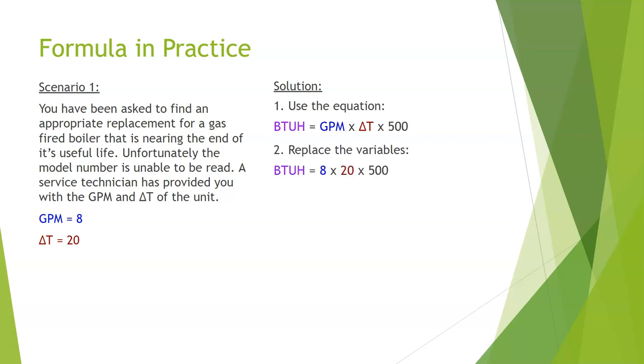The second thing I do is replace my variables. BTU equals 8 GPM times delta T of 20 times my magic number of 500. Now I work the formula. BTU equals 8 times 20, which gives me 160, times 500. That gives me a BTU of 80,000 BTUs. This is notwithstanding any efficiencies or AFUEs. We work it very simply just like our HVAC airflow calculation. It works in the exact same way. Our variables are just a little different.